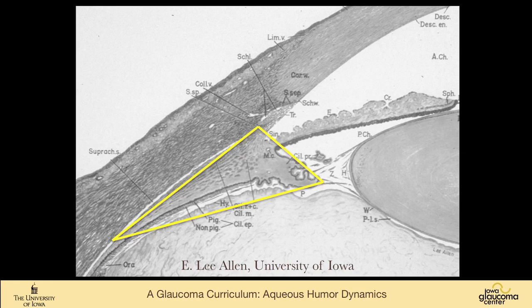We're going to be talking about the ciliary body and the outflow system in the iridocorneal angle. The angle, of course, is the angle made up by the clear cornea and the iris. Sitting within the angle is the trabecular meshwork and the ciliary body face, which is where the outflow occurs.